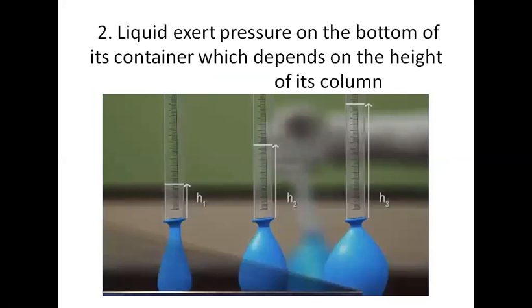As you can see in the image, the first container has very little bulge in the balloon because the height of the liquid in the column is low. In the last container, the bulge in the balloon is high because the height of the liquid column is greater. So liquid exerts pressure on the bottom of its container, which depends on the height of its column.